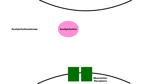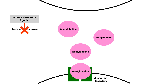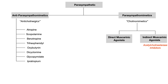The mechanism of all indirect muscarinic agonists is that they are acetylcholinesterase inhibitors — they inhibit the enzyme that normally breaks down acetylcholine, thereby effectively increasing acetylcholine levels, which allows them to carry out parasympathomimetic effects. So you have two options on this side of the chart: direct muscarinic agonists and indirect muscarinic agonists that work as acetylcholinesterase inhibitors.